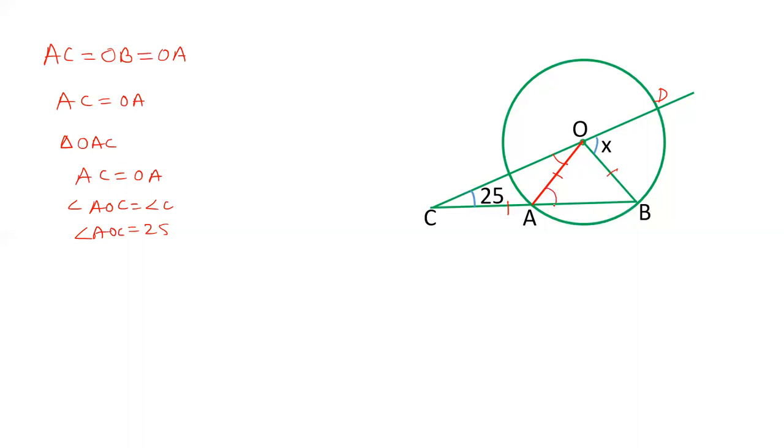Now let's take this angle, angle OAB. Angle OAB is an exterior angle of triangle AOC, and therefore it equals the interior opposite angles, angle C and angle AOC. So angle OAB equals 50.